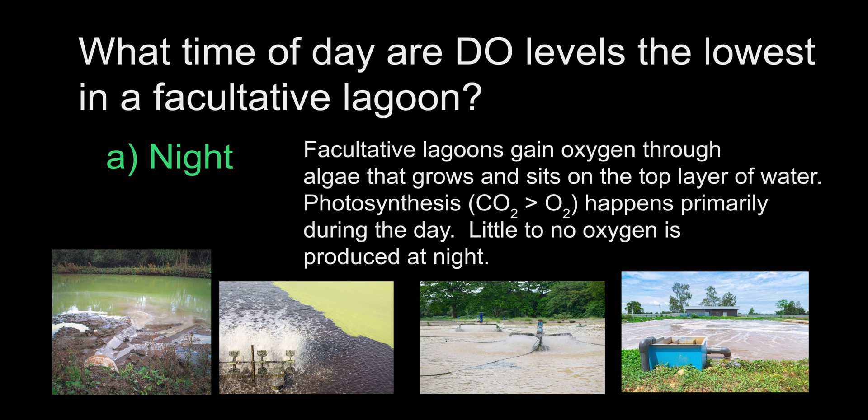The answer is A, night. Facultative lagoons are a simple and effective way to treat wastewater when permits are not very stringent. A traditional facultative lagoon will let mother nature do its thing. Photosynthesizing algae that grows on the surface of the lagoon will introduce oxygen into the water during the day, and then at night, when there is no sun, there is little to no oxygen production taking place. These types of lagoons are pictured on the bottom left. They may also be assisted with simple mechanical aeration techniques. Pictured on the middle right is a lagoon that is more similar to an aeration basin using heavy duty mechanical mixers, and on the far right is a lagoon using small bubble diffusers.